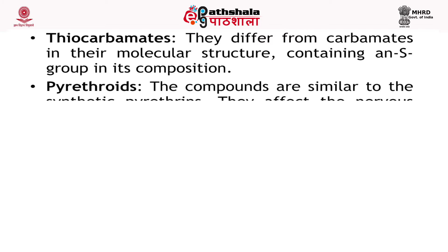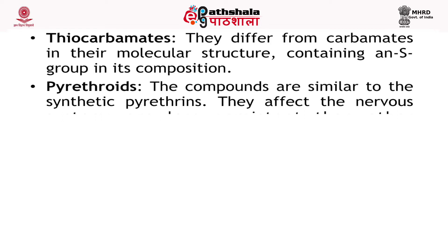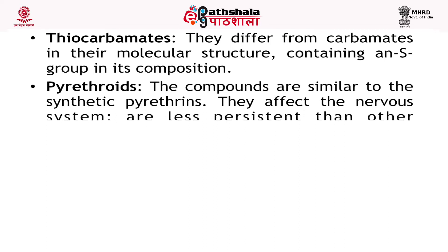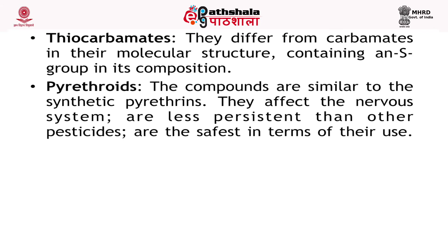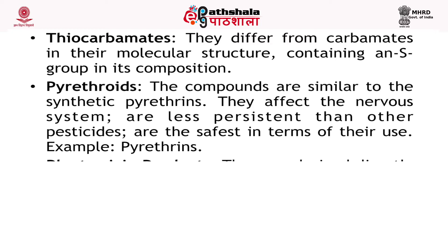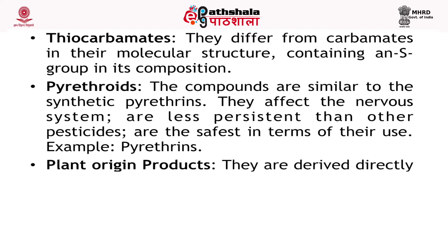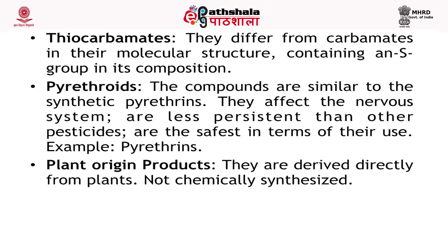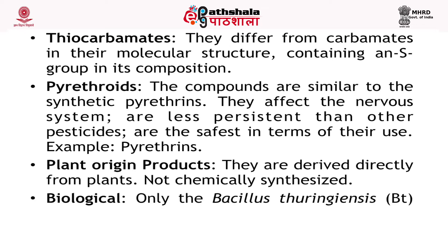Pyrethroids: these compounds are similar to the synthetic pyrethrins. Pyrethrins, obtained from petals of Chrysanthemum cinerariaefolium, affect the nervous system, are less persistent than other pesticides, and are the safest in terms of their use. Some are used as household insecticides. Examples: pyrethrins. Plant origin products are derived directly from plants, not chemically synthesized.